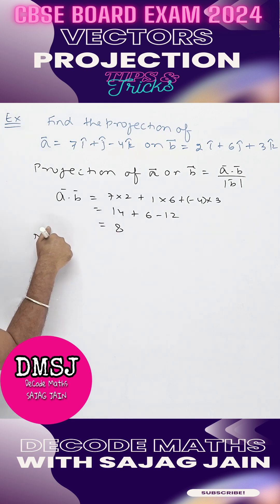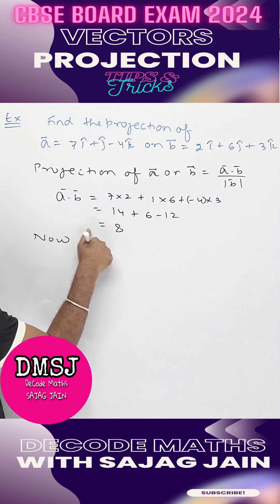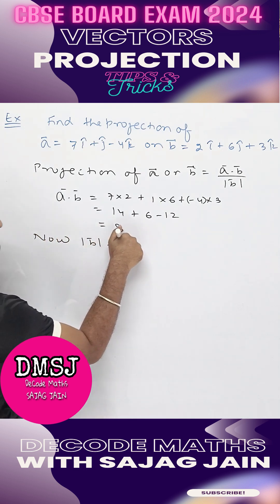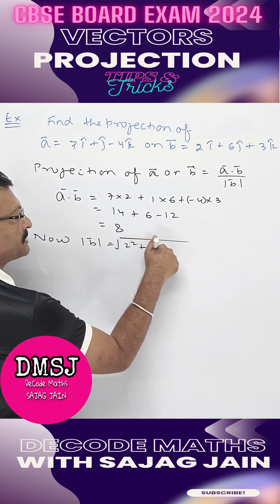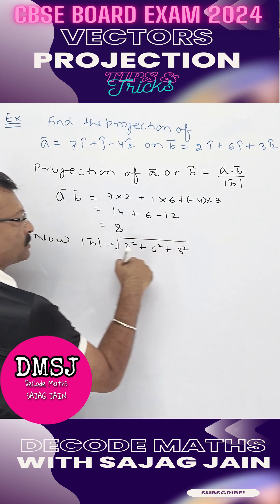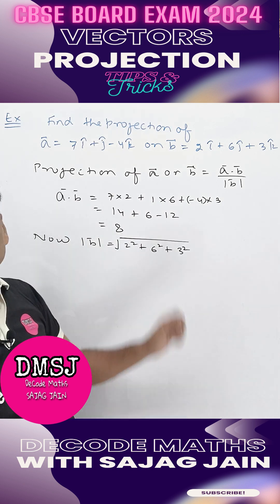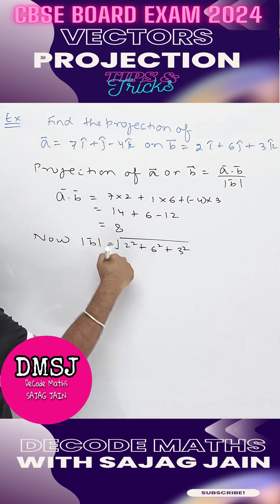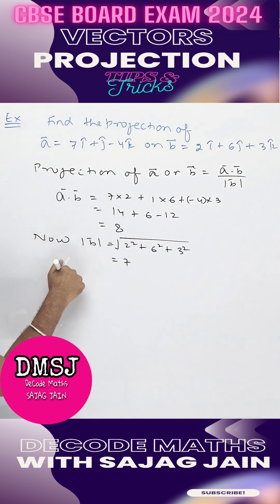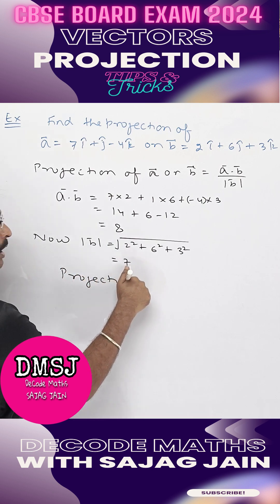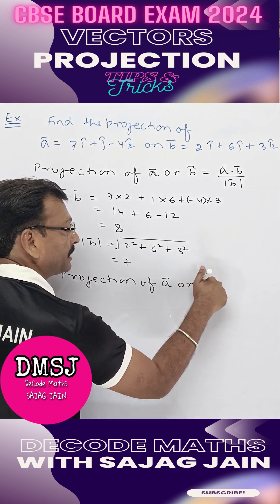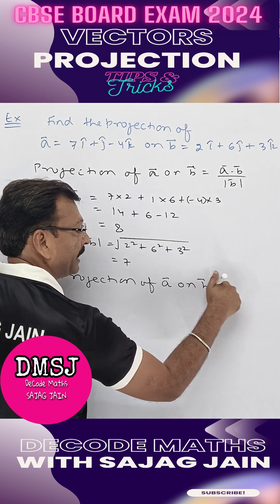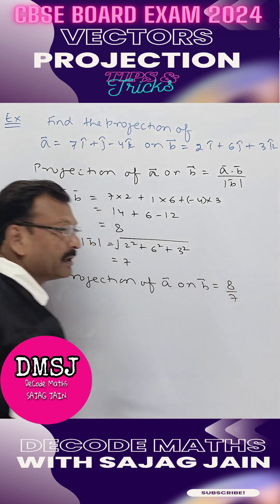Now modulus of vector B: this will be under root of 2 square plus 6 square plus 3 square, which is 4 plus 36 plus 9 equals 49, so under root of 49 is 7. Therefore, the projection of vector A on vector B is 8 by 7.